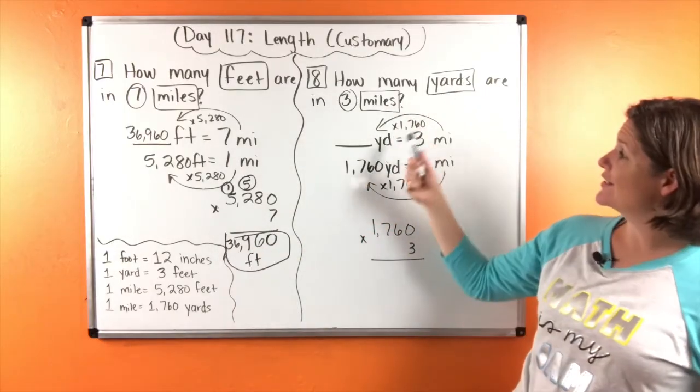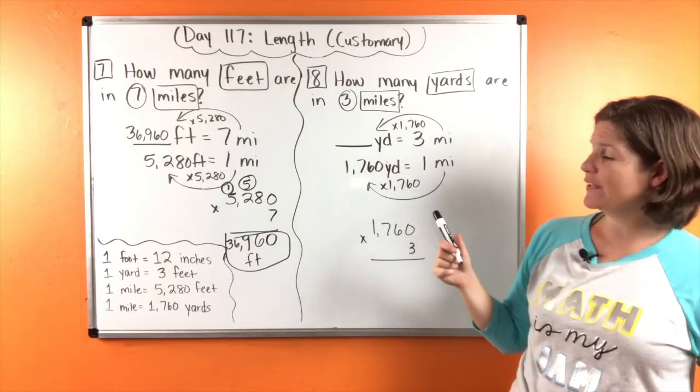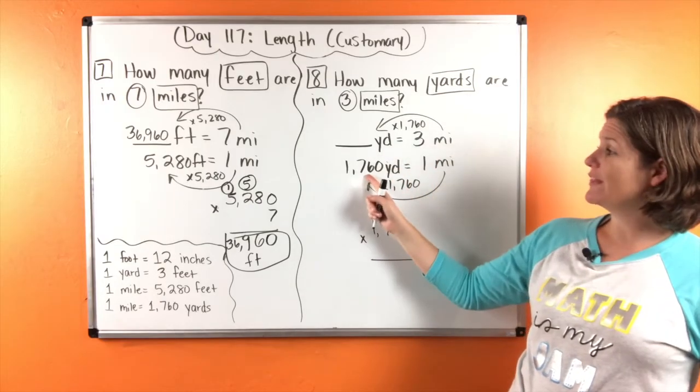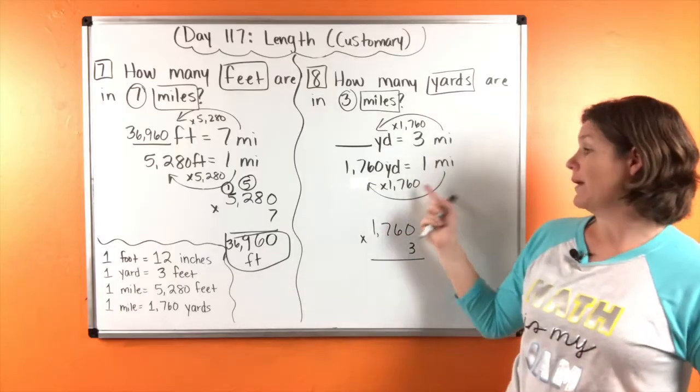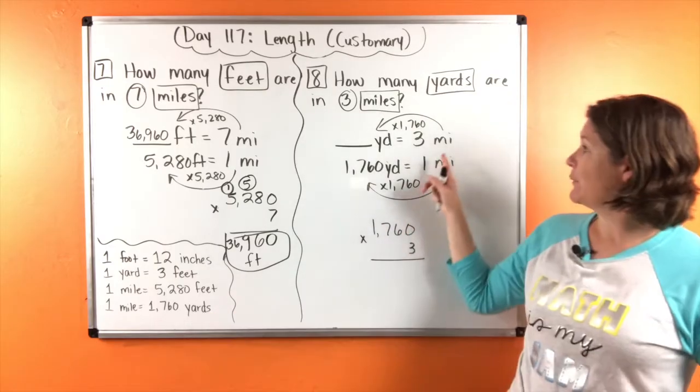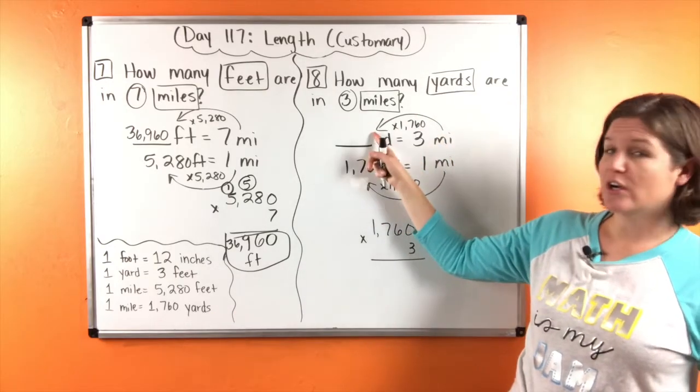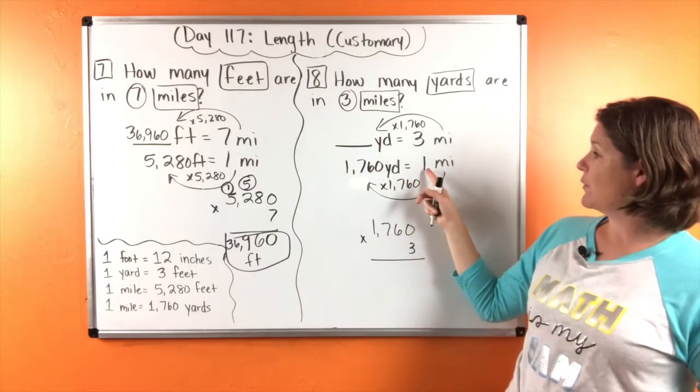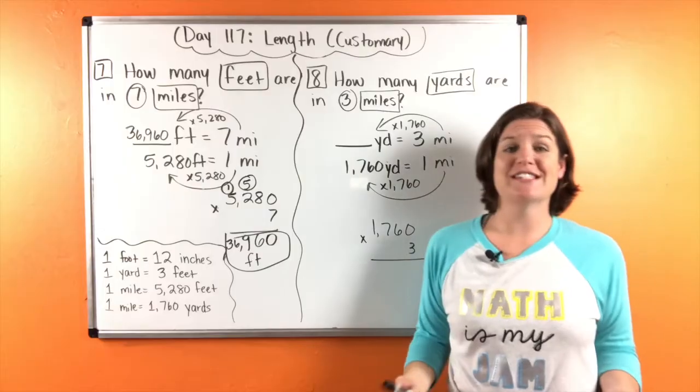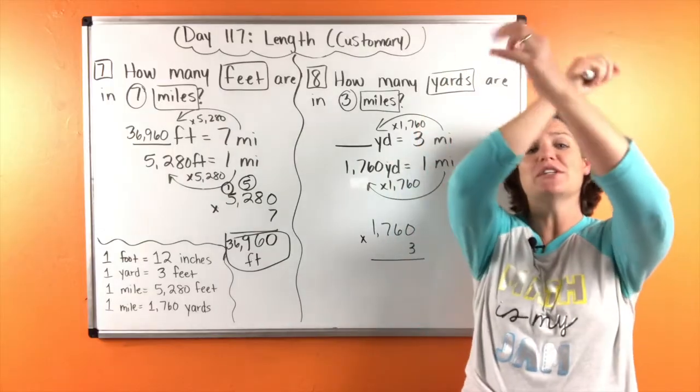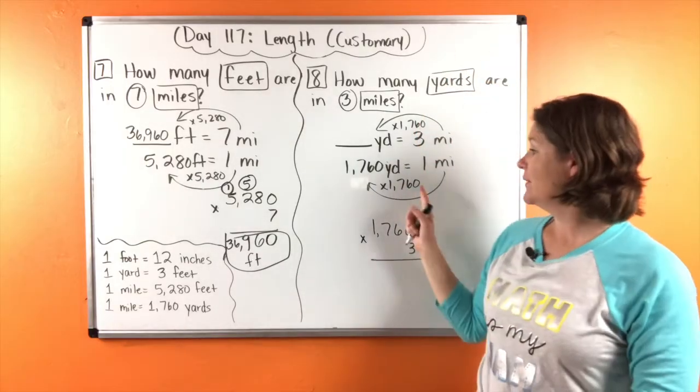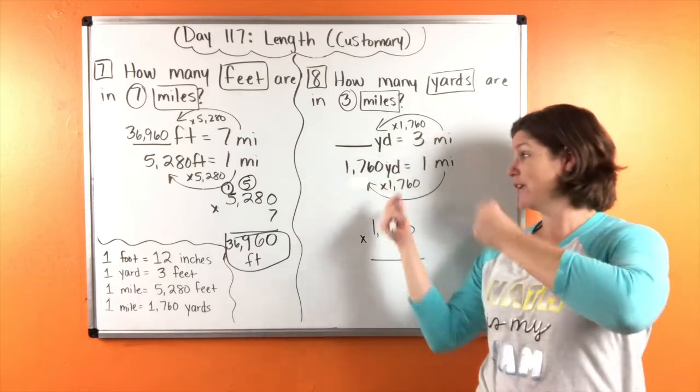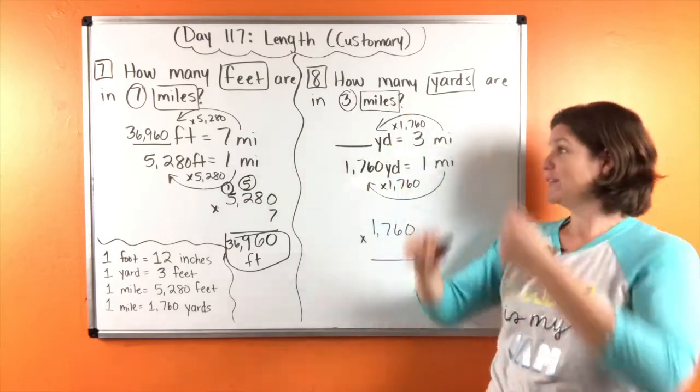How many yards are in three miles? So we know there's 1,760 yards in one mile. And we know we're converting from miles to yards. So going from one to 1,760, we're increasing. So multiplying by the same number. So same on the bottom, same on the top.